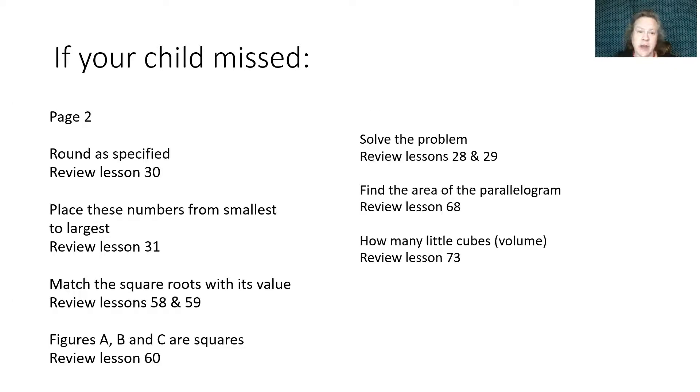On the second page, if your child missed the rounding problem, review lesson 30. The place these numbers from smallest to largest section, review lesson 31. Match the square roots to their values, review lessons 58 and 59. For the one that says figures A, B, and C are squares, so you're using the Pythagorean theorem, review lesson 60. For the solve the problem question, review lessons 28 and 29. For the find the area of a parallelogram, review lesson 68. And for how many little cubes or the volume problem, review lesson 73.